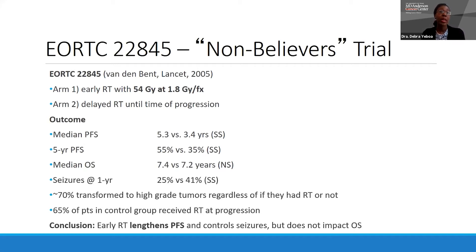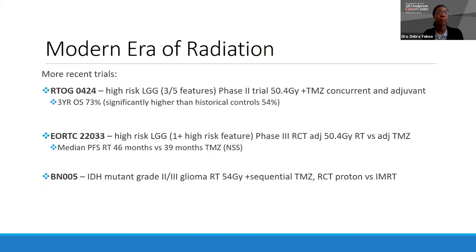Summarizing, early radiation can improve progression-free survival and help with refractory seizures but does not necessarily impact overall survival. In the modern era, from RTOG 0424 — which included patients with at least three high-risk features using 50.4 Gy with concurrent and adjuvant TMZ — the three-year overall survival was 73%, significantly higher than the historical control of 54% for the same cohort, even though this included IDH mutants as well as IDH wild type.